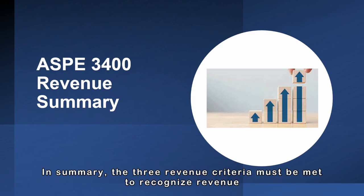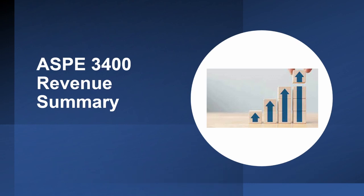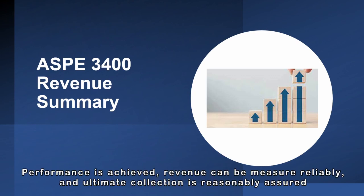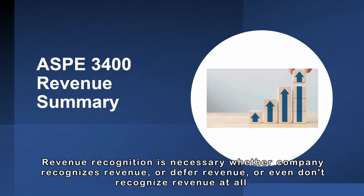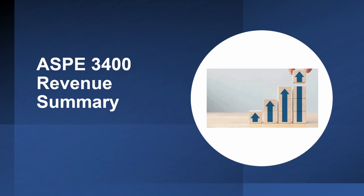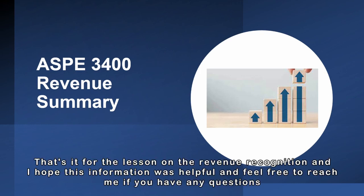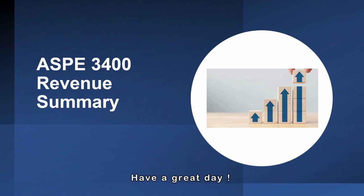In summary, three revenue criteria must be met to recognize revenue: performance is achieved, revenue can be measured reliably, and ultimate collection is reasonably assured. Revenue recognition is necessary whether a company recognizes revenue, defers revenue, or does not recognize revenue at all. That's it for the lesson on revenue recognition — I hope this information was helpful, and feel free to reach me if you have any questions. Have a great day!